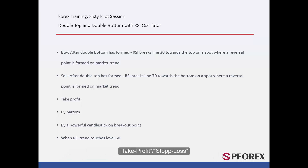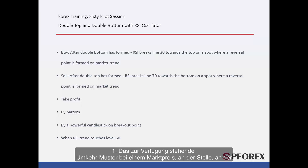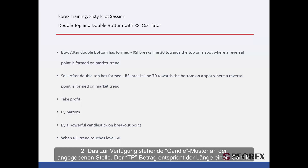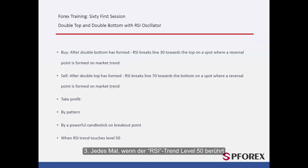Take Profit or Stop Loss. Take Profit price can be determined by, firstly, the available reversal pattern in market price on the spot where RSI line crosses level 30 towards the top or level 70 towards the bottom. Secondly, the available candle pattern on the given spot — TP amount equals the length of a candle. Thirdly, whenever RSI trend touches level 50.